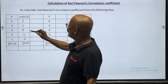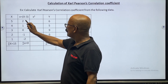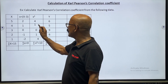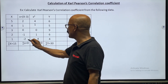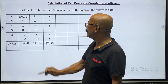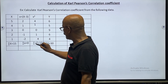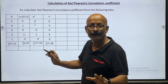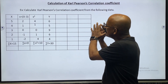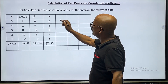Now we have to find out the value of x squared. That means 2 squared is 4, 1 squared is 1, 0 squared is 0, minus 1 squared is 1, and minus 2 squared is 4. We make a total of this column, and summation x squared is equal to 10. Now the same method we have to follow to find out the other values for Y.